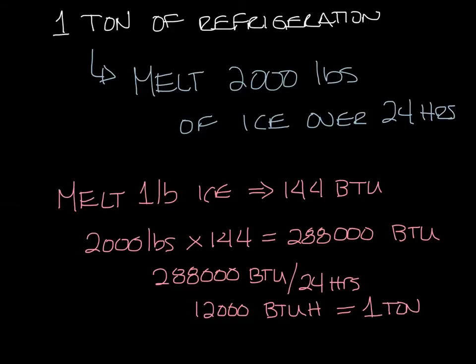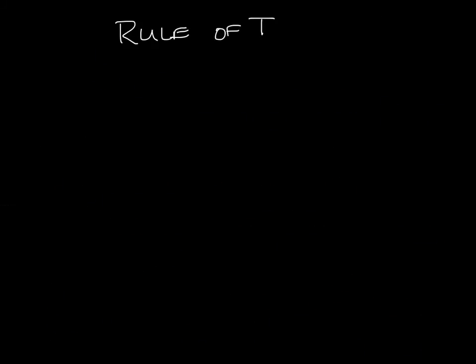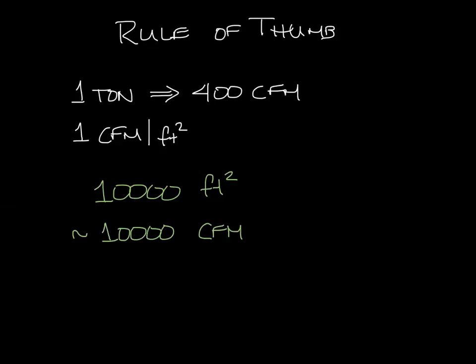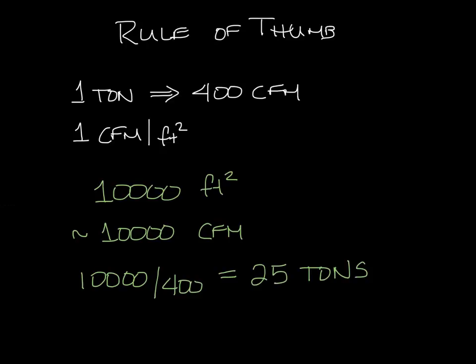Now let's cover a couple of handy rules of thumb. First, you'll want about 1 ton for every 400 CFM. And in a typical office you'll have about 1 CFM per square foot. So say you have a space that's 10,000 square feet — you know that'll be about 10,000 CFM. And if you divide that by 400 CFM per ton, you get 25 tons of refrigeration for that space. It's a handy rule of thumb.